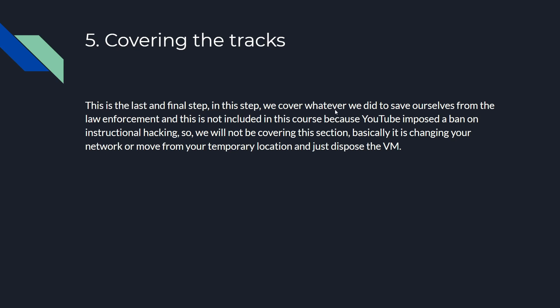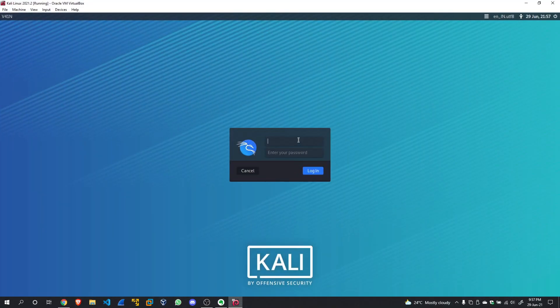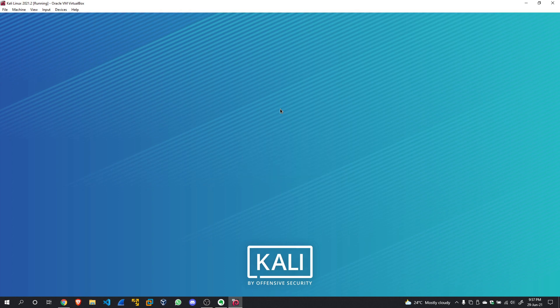The last and final step is covering tracks. In this step we cover whatever we did to save ourselves from law enforcement — this is what bad guys usually do. During a legitimate penetration test a company gives us complete access. There are three types of penetration tests: black box, gray box, and white box. We won't be covering covering tracks in this course because YouTube has imposed a ban on instructional hacking. Now let's boot up your Kali machines and open Mousepad to start taking notes.